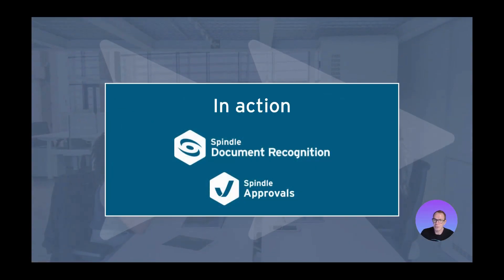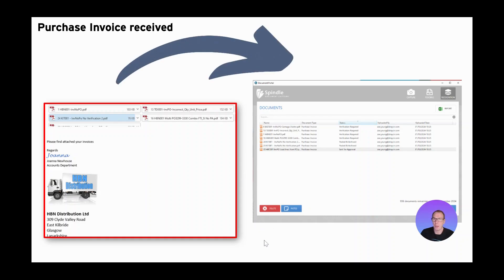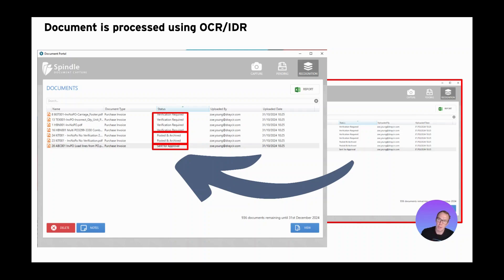Let's have a look at the solutions in more action. First of all, we receive our document via email and forward it onto our specific document recognition email address, which uploads the document into our system. We extract the data from the document, make those matches, and then give the user a status update. That status tells us whether the document needs further verification, whether it matches the purchase order and can go straight to being posted and archived, or whether it goes to an approval workflow where someone needs to make the approval before it can be posted and archived.